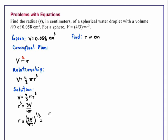Substituting, we will have 3 times our volume, 0.058 centimeters cubed, divided by 4 times pi, and this entire result to the one-third power. And when we enter this into our calculator, we will get a readout of 0.24013 centimeter.